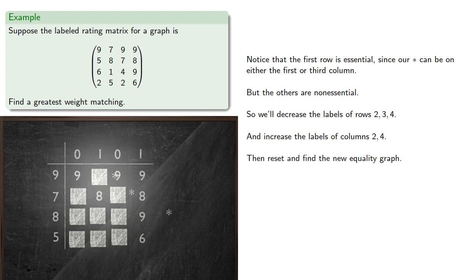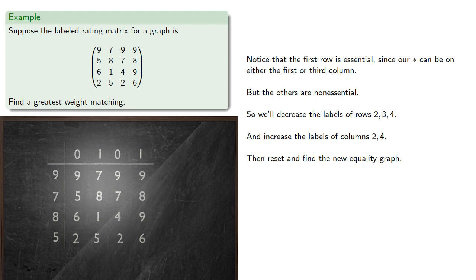Then reset and find the new equality graph. Since our column labels are different, we do have to be a little bit more careful in our selection. So in the first row, 9 plus 0 is 9, so this first column first row entry is in the equality graph. 9 plus 1 is not 7, so the first row second column entry is excluded. 9 plus 0 is 9, so we include the first row third column. And 9 plus 1 is not 9, so we exclude first row fourth column.